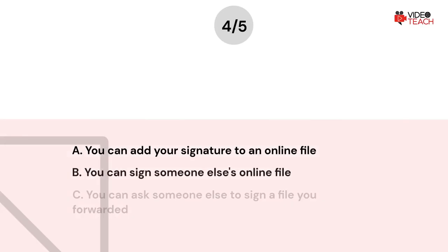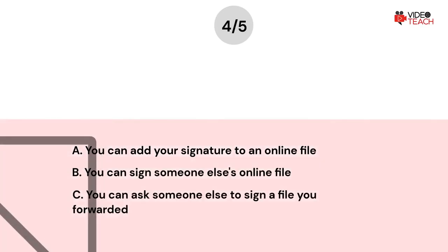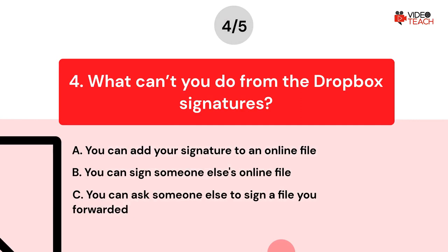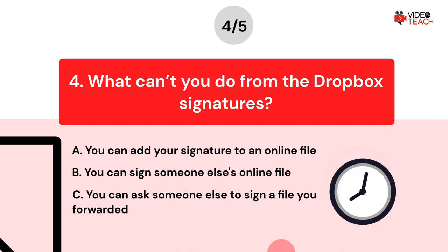What can't you do from Dropbox Signatures? Option A: You can add your signature to an online file. Option B: You can sign someone else's online file. Option C: You can ask someone else to sign a file you forwarded. Now you have about 15 seconds to think about your answer.